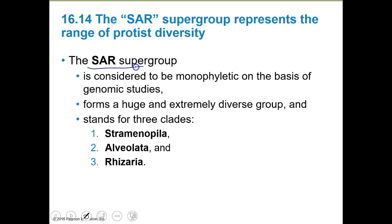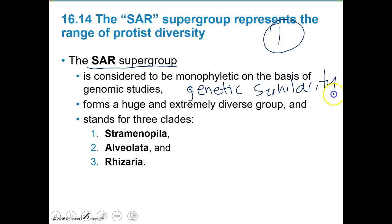Let's start with our SAR supergroup — group one. The SAR group is considered monophyletic because of genomic studies, meaning they have genetic similarity. It forms a huge and extremely diverse group with three clades: Straminopila, Alveolata, and Rhizaria, which we'll briefly touch on.